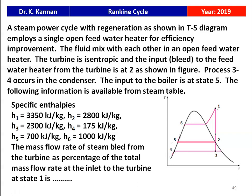We need to calculate the mass flow rate of steam bled from the turbine as a percentage of the total mass flow rate at the inlet to the turbine (state 1). So, at the turbine inlet, a certain quantity of steam is taken for the open feed water heater, and the remaining steam flows through and is condensed, then mixed in the open feed water heater.